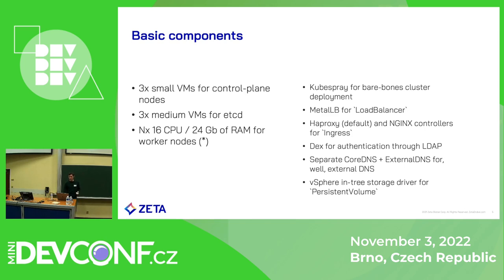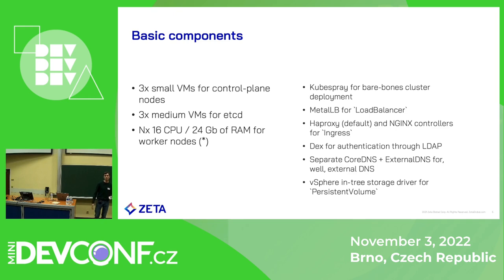As for the cluster components listed on the right side of the slide, it's pretty standard and I won't dive too deep into details. I'll just mention that the reason we're using two ingress controllers — HAProxy ingress controller and Nginx ingress controller — is for convenience only. Some of our developers requested Nginx ingress controllers because they needed some fancy rewriting functionality for their applications.